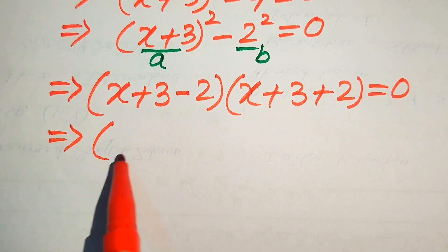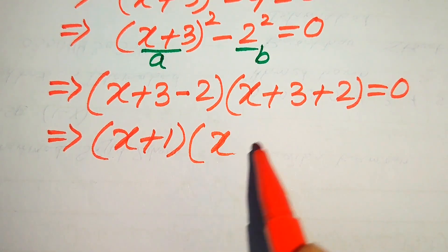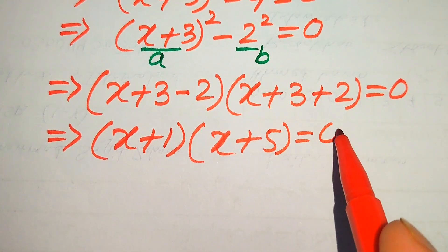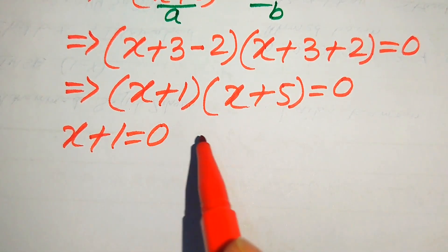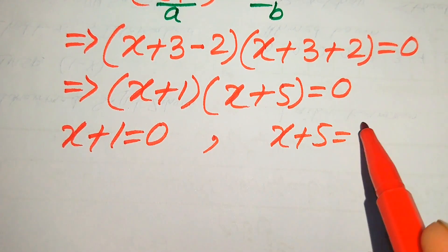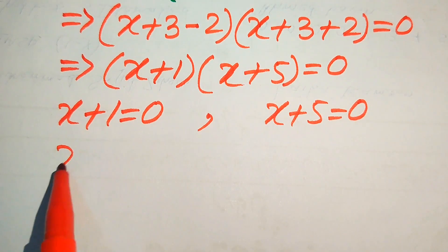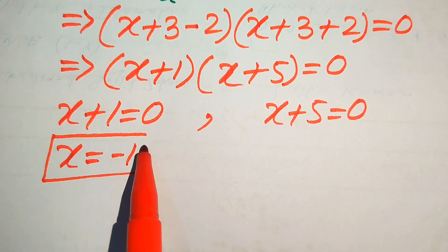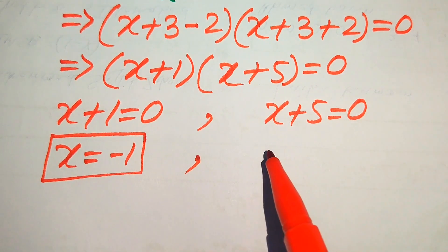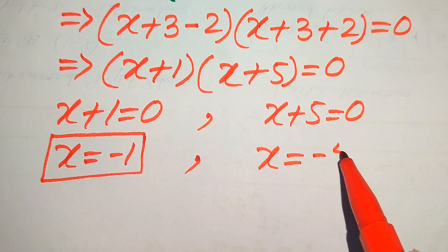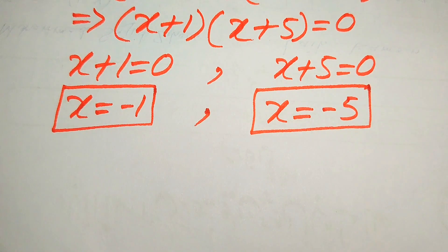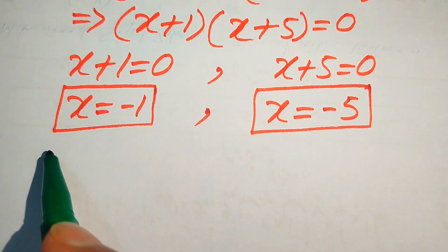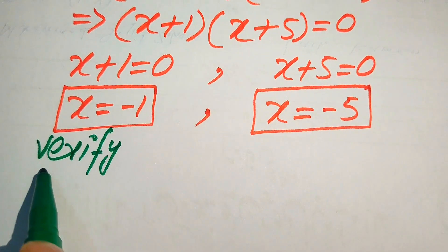Simplifying: (x + 1)(x + 5) = 0. We split into two cases: Case 1: x + 1 = 0, giving x = −1 as the first root. Case 2: x + 5 = 0, giving x = −5 as the second root. In the second method we get the same roots, and now we need to verify these two roots and separate the solutions from any extraneous roots.